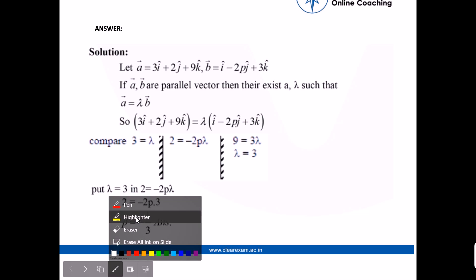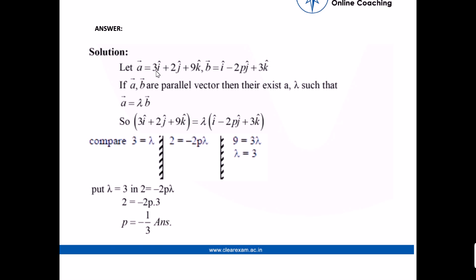The answer is let's assume a vector is equal to 3i plus 2j and 9k and b vector is equal to i minus 2pj plus 3k. If the vectors a and b vector are parallel vector then there exist a alpha and lambda such that a vector is equal to lambda b vector.